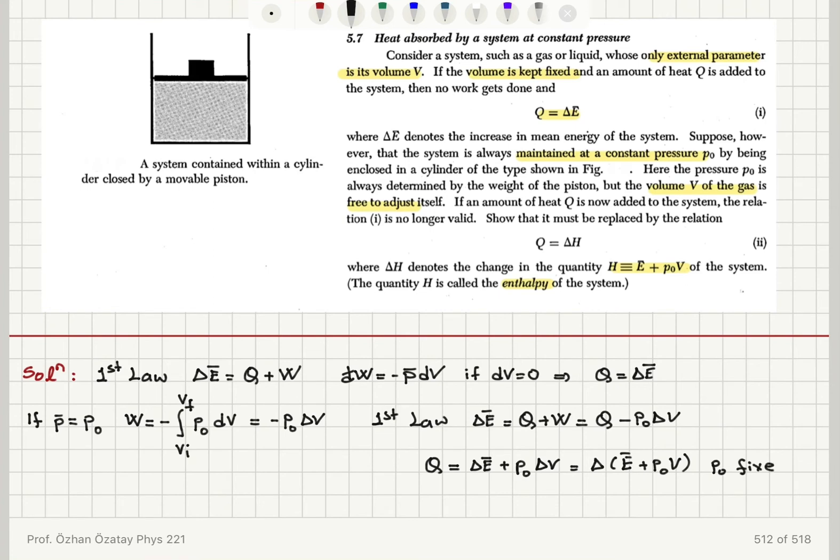And I define the quantity in parentheses as H, the enthalpy of the system: E bar plus P0V. This is called enthalpy.